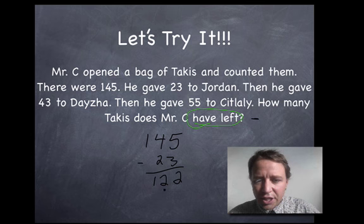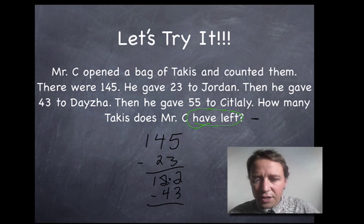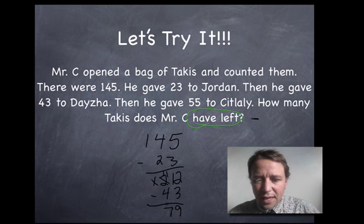Then I gave 43 to Dayzha. 2 minus 3, can't do that. That becomes a 1, 2 becomes a 12. 12 minus 3 is 9. 1 minus 4 can't do that. 11 minus 4 is 7. 0 minus 0 is 0.